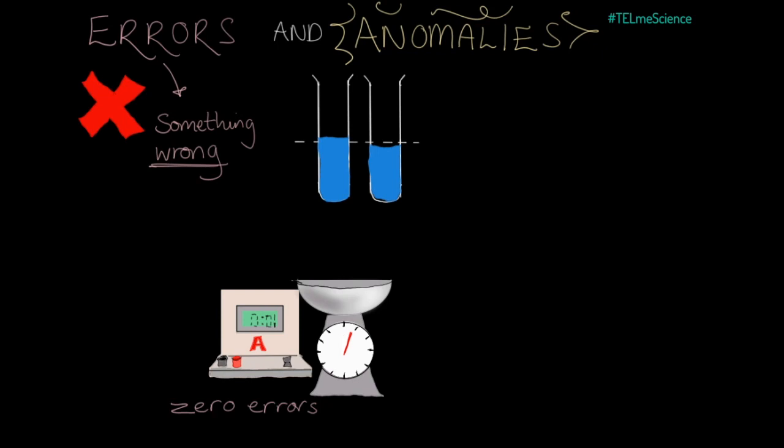You've done an experiment and the results you've got weren't what you expected. Isn't that the same thing as an anomaly? Well, there's an important difference between the two. All experiments have random errors. It's inevitable and you can't get rid of them.